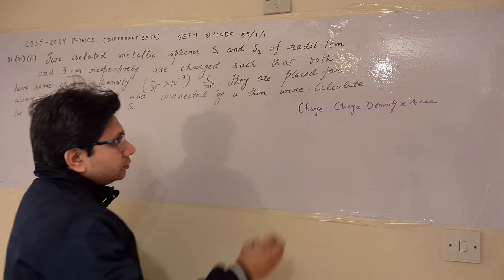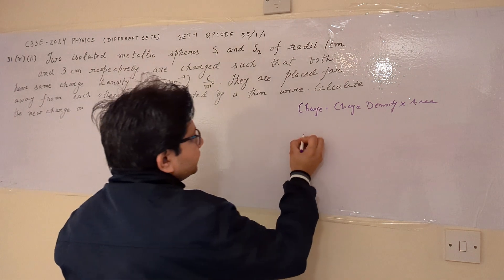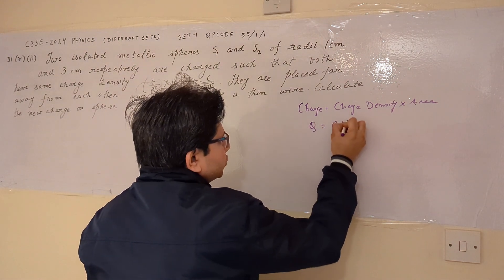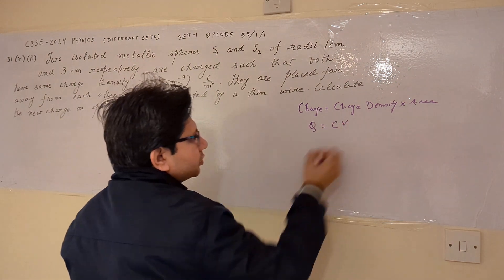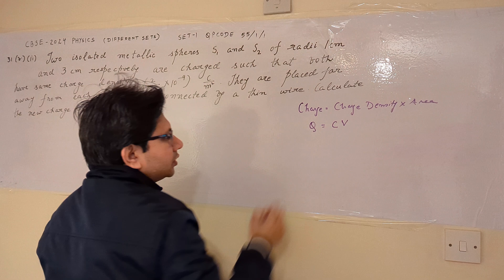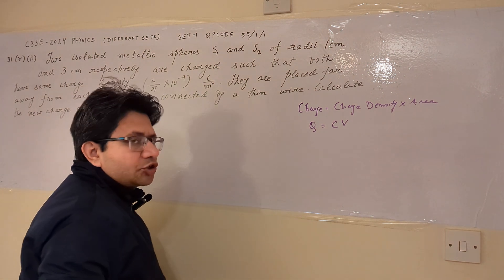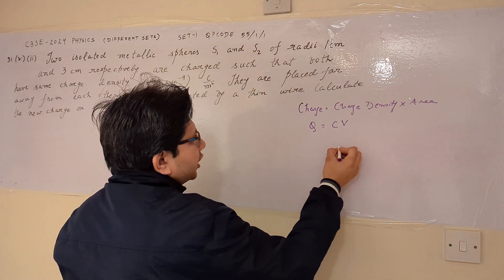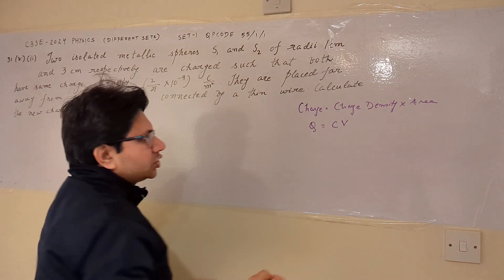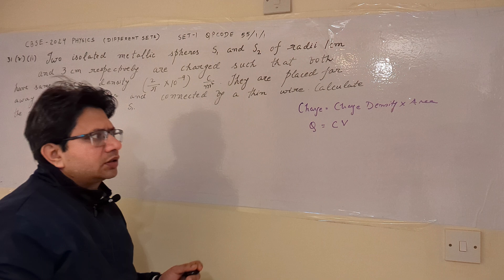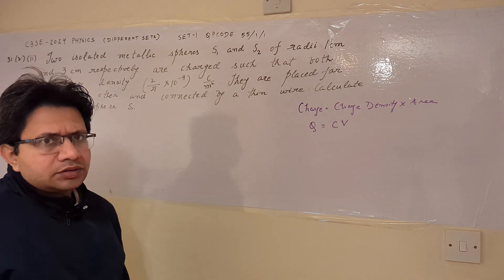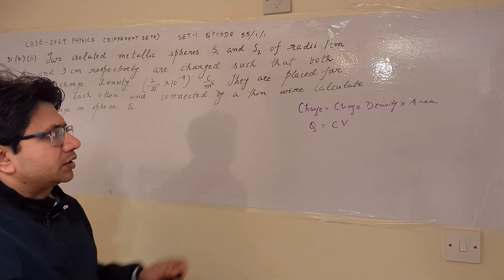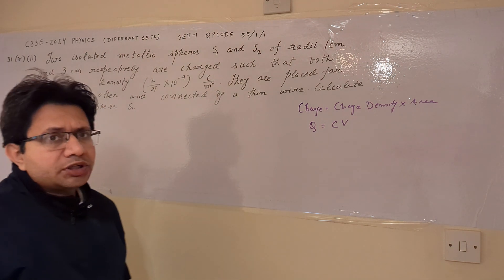Then charge equals capacitance multiplied by potential. This concept is used. And when charges are connected by a thin wire, their